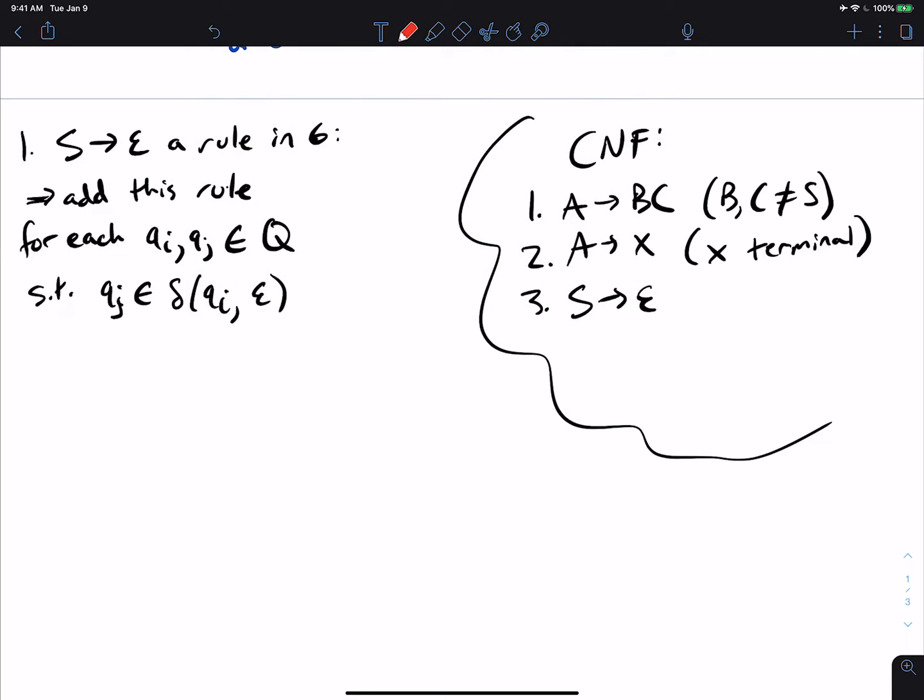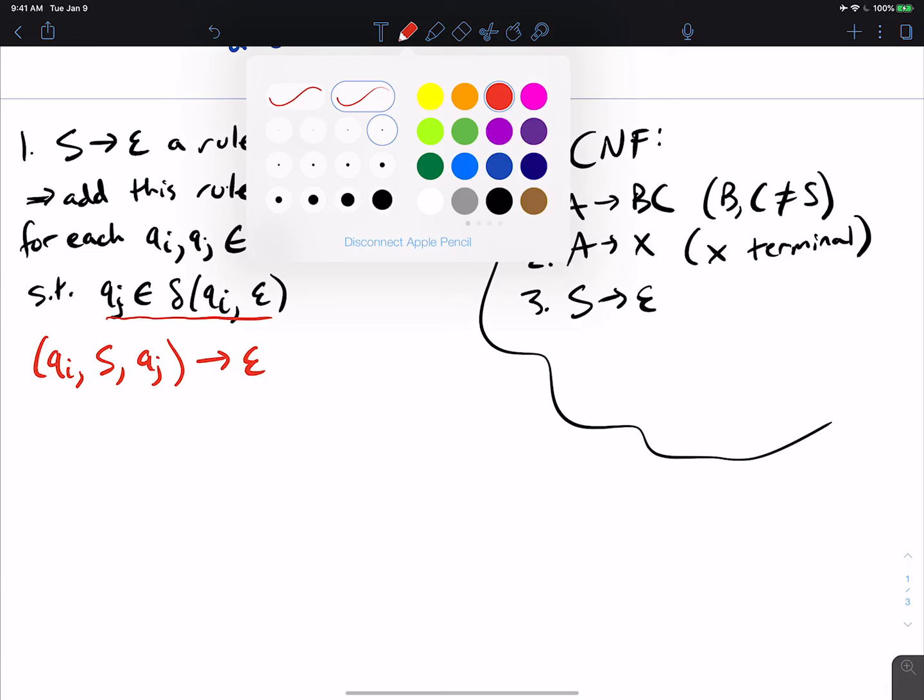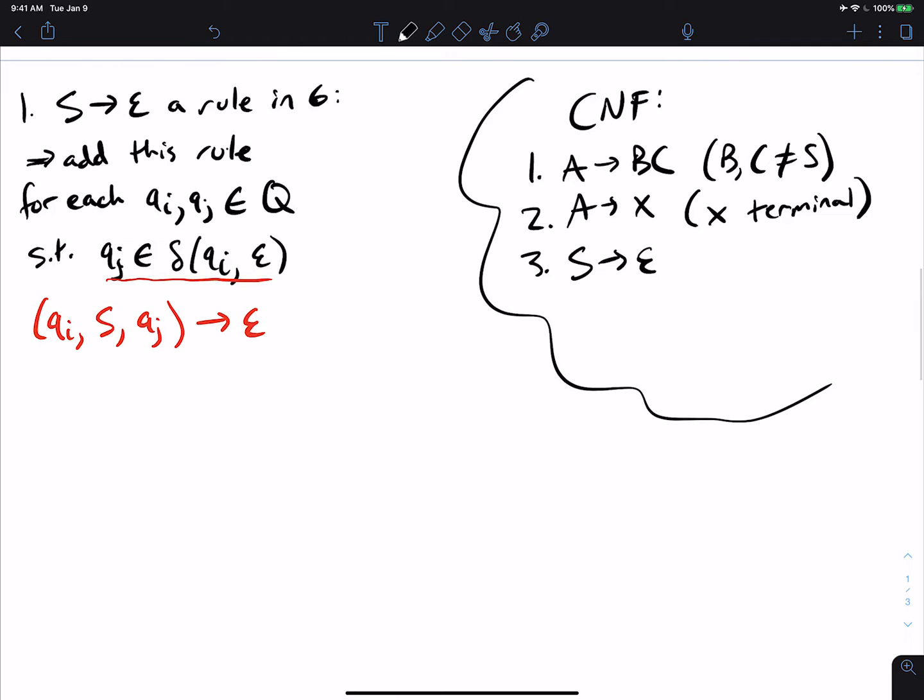Then we'll add the rule, which is, so I'm going to change it in red, so we know it's the rule. So QI S QJ goes to epsilon. So it says, what could S generate as well as what could QI to QJ make? Well, because of the condition we're enforcing here that QJ is a transition from QI on epsilon and S can make epsilon directly. Well, we got to add this rule in because S can make epsilon and QI can go to QJ on epsilon.